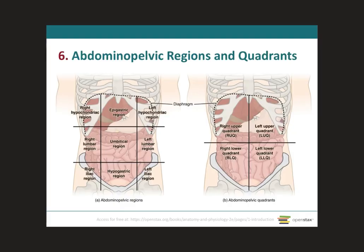Due to the fact that the abdominal pelvic cavity is so large and contains several important vital organs, in order to easily describe the precise location of these internal organs, the abdominal pelvic cavity is divided into nine abdominal pelvic regions. Let's go over those abdominal pelvic regions.